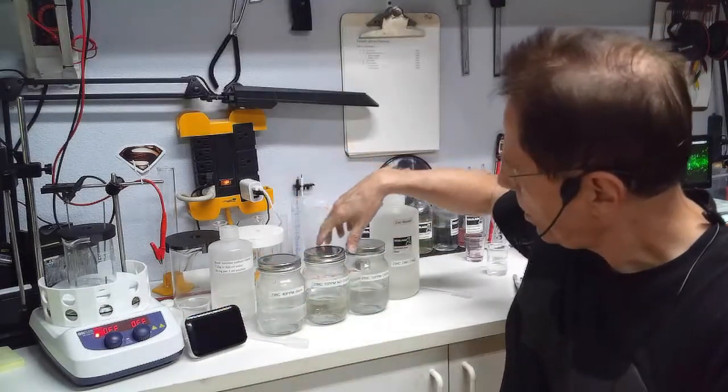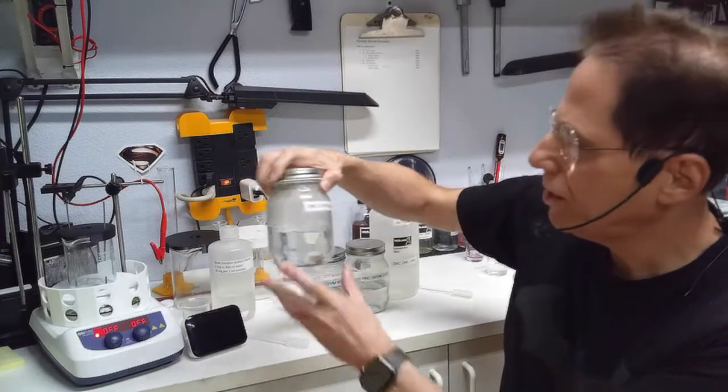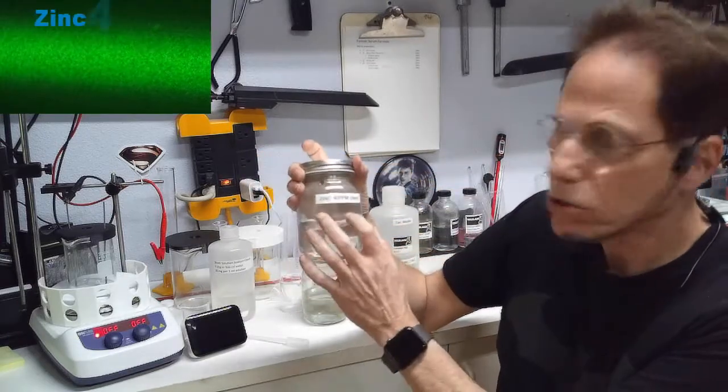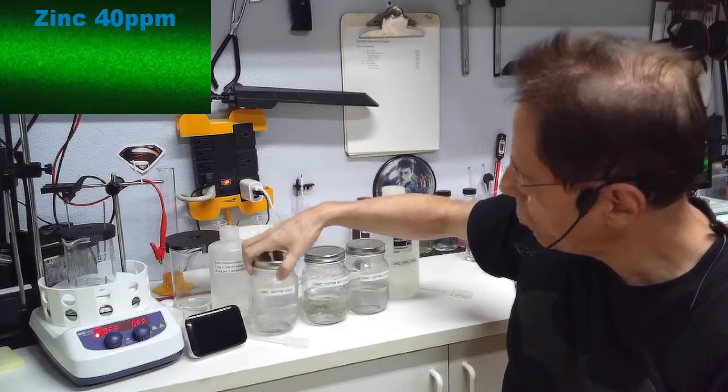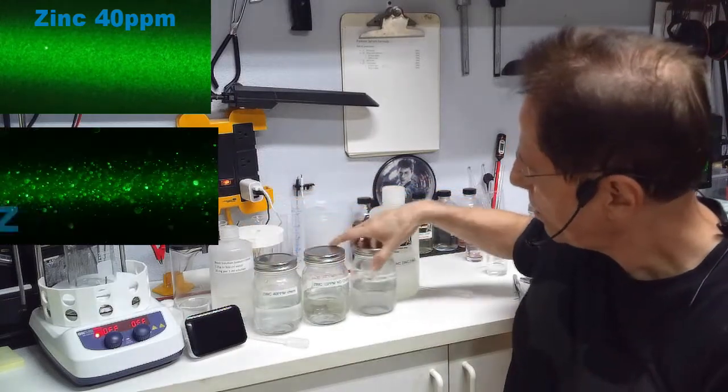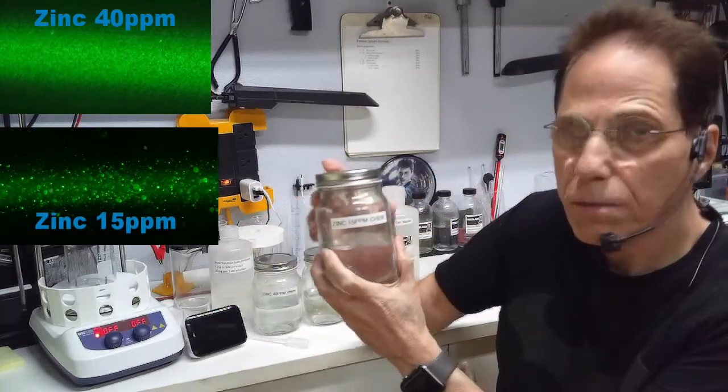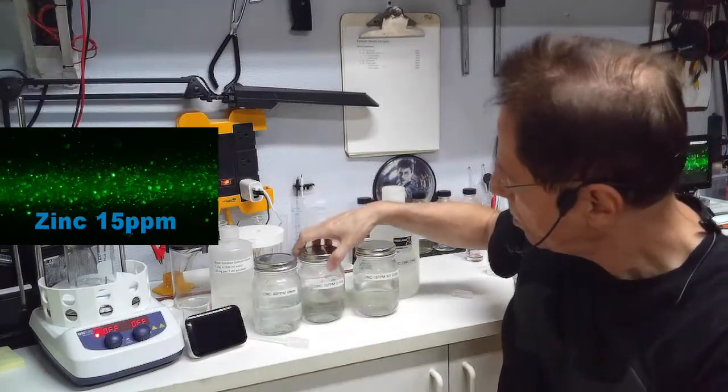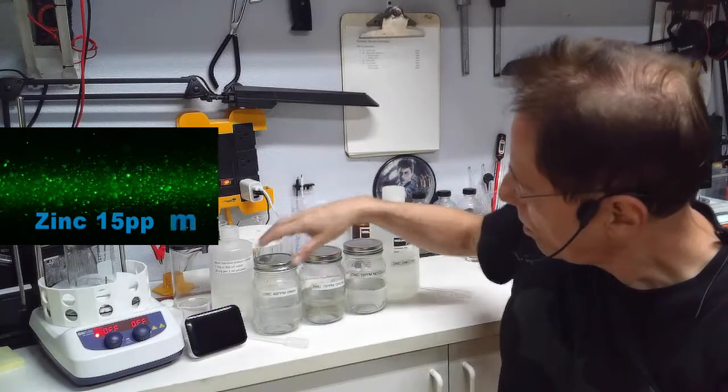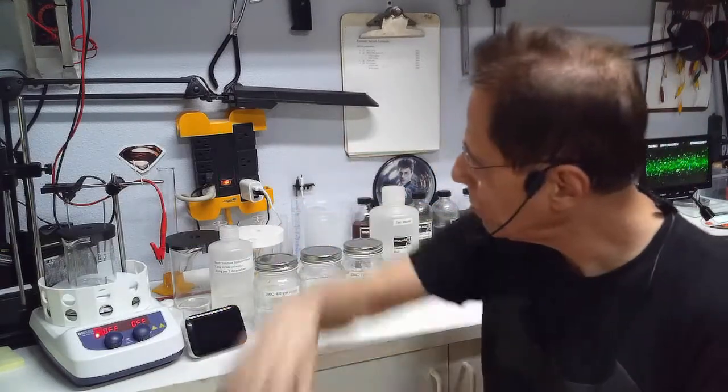If you follow the chart, you'll have a certain percentage of solution. This is a 40 parts per million zinc solution and this is a 15 parts per million zinc solution.